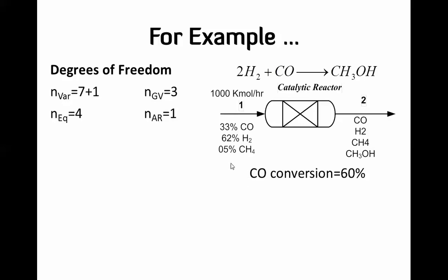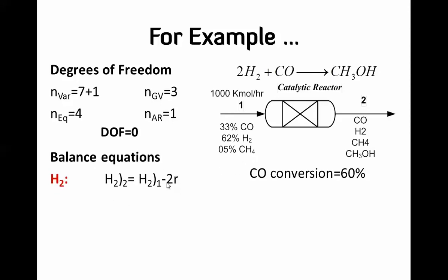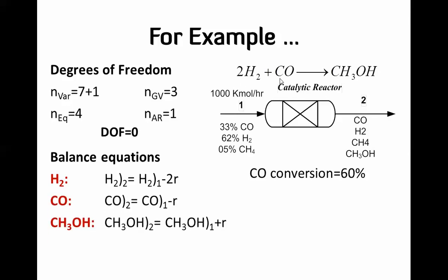We have three given variables, four equations, and one relation which is the conversion, so the degrees of freedom is zero. The balance equations are: for hydrogen — hydrogen_out = hydrogen_in minus 2·r; for carbon monoxide — CO_out = CO_in minus r; for methanol — CH₃OH_out = plus r; and for methane — it is an inert component, so it passes through unchanged.